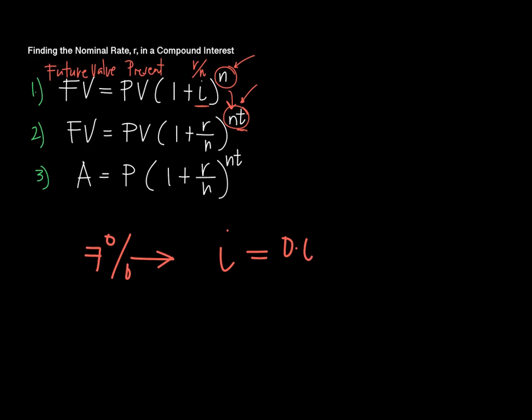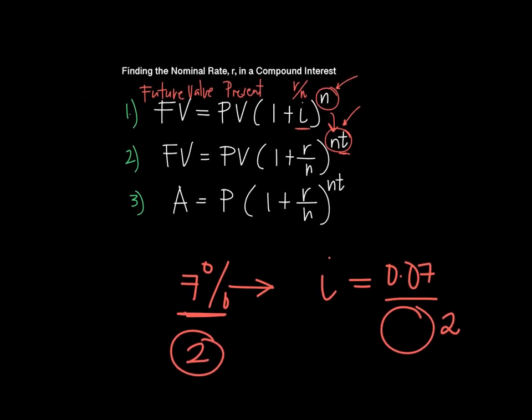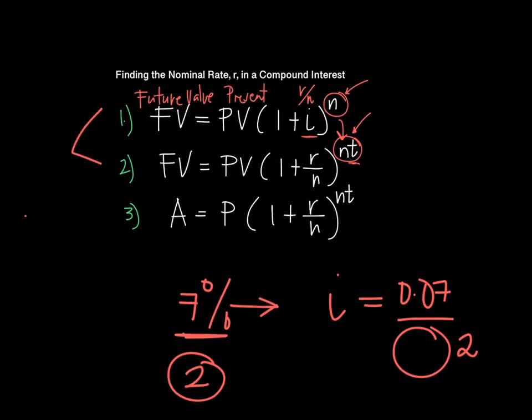For instance, if the yearly interest rate is 7%, then I equals 0.07 divided by the number of times the interest is compounded. If it's 7% compounded semi-annually, semi-annually means 2, then my I is 0.07 over 2.